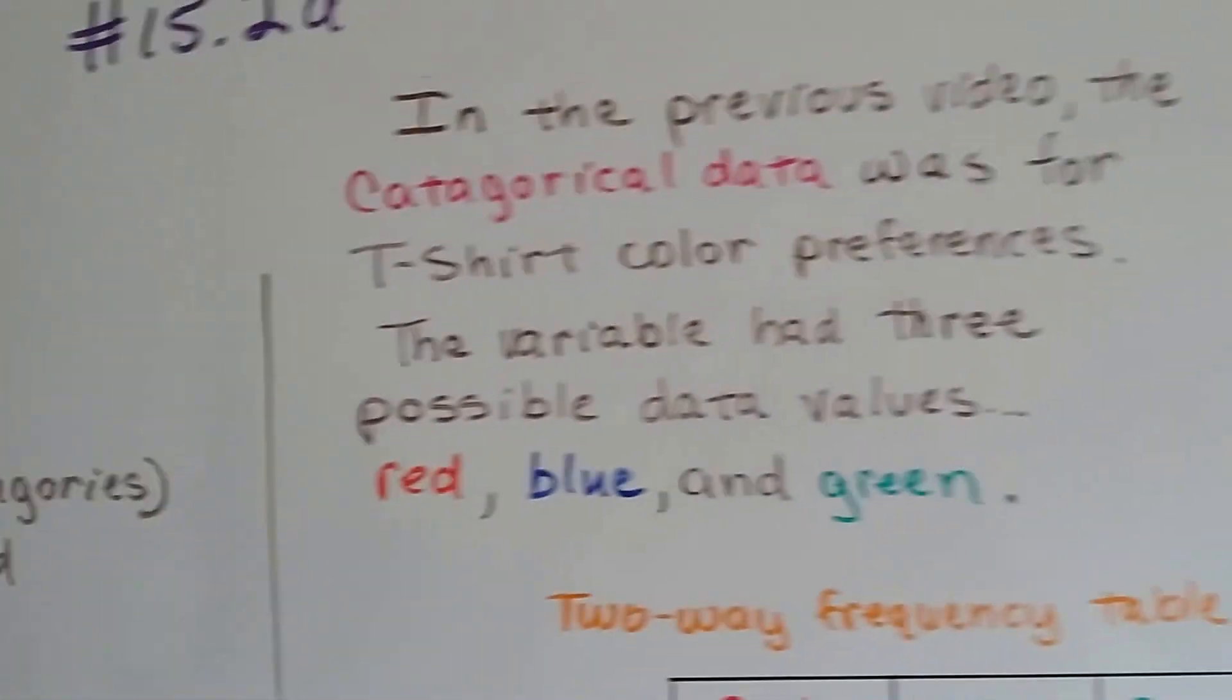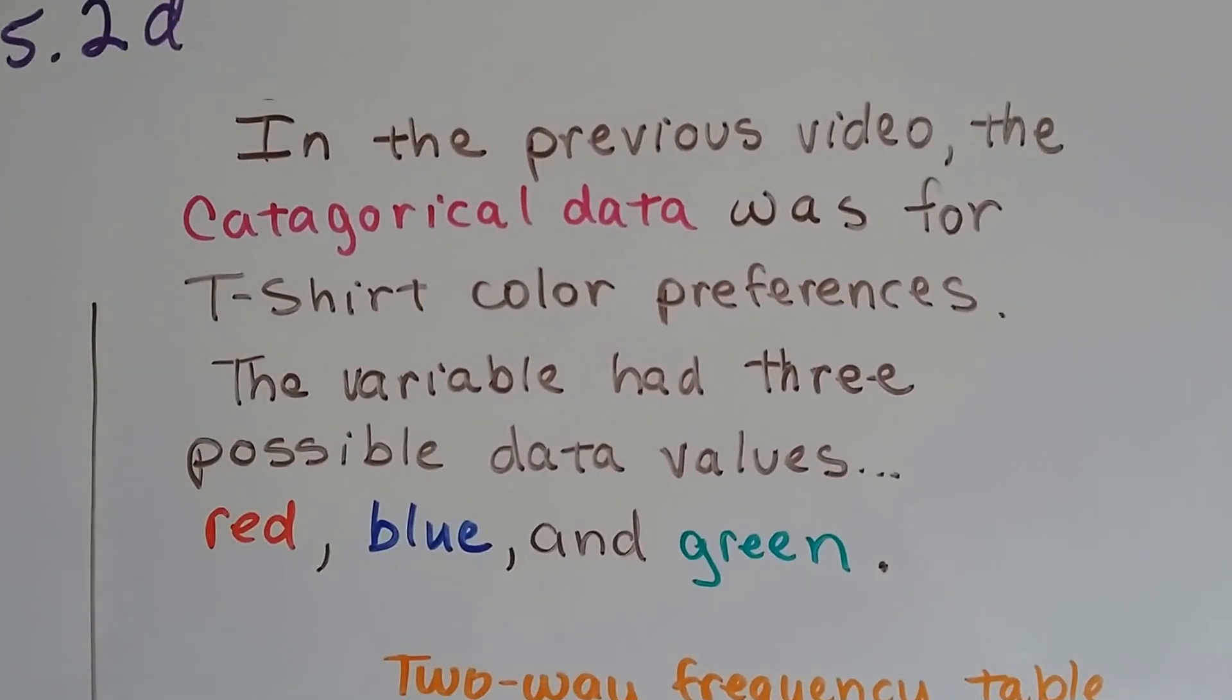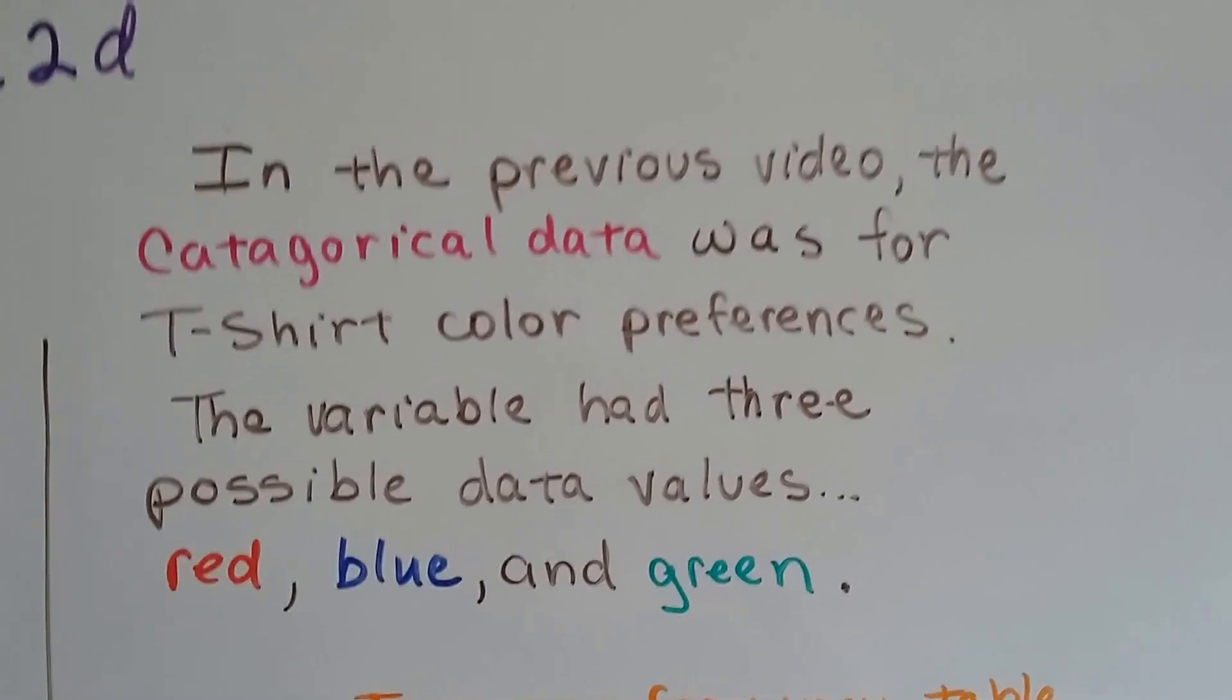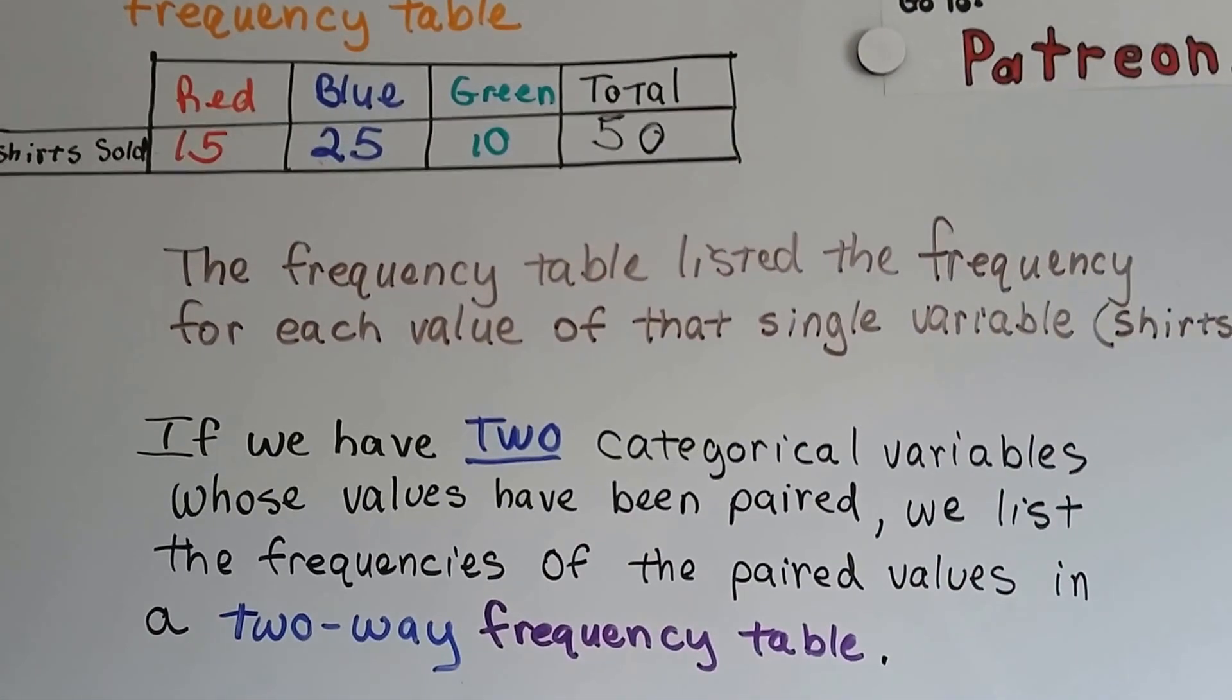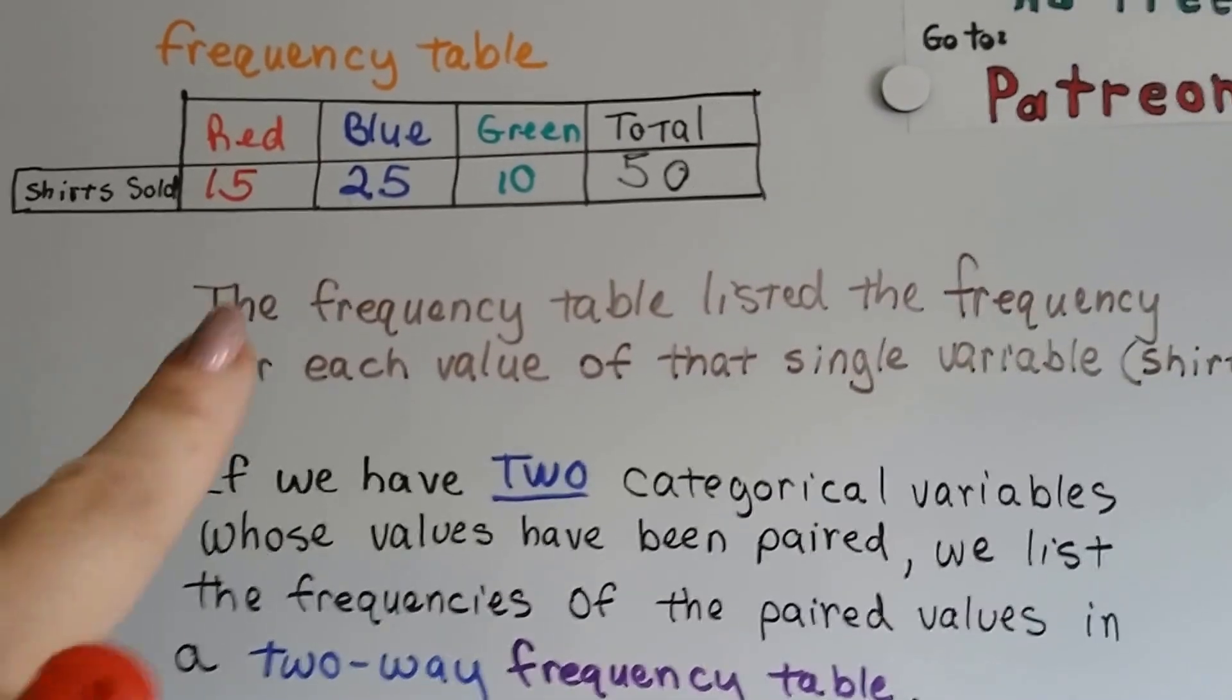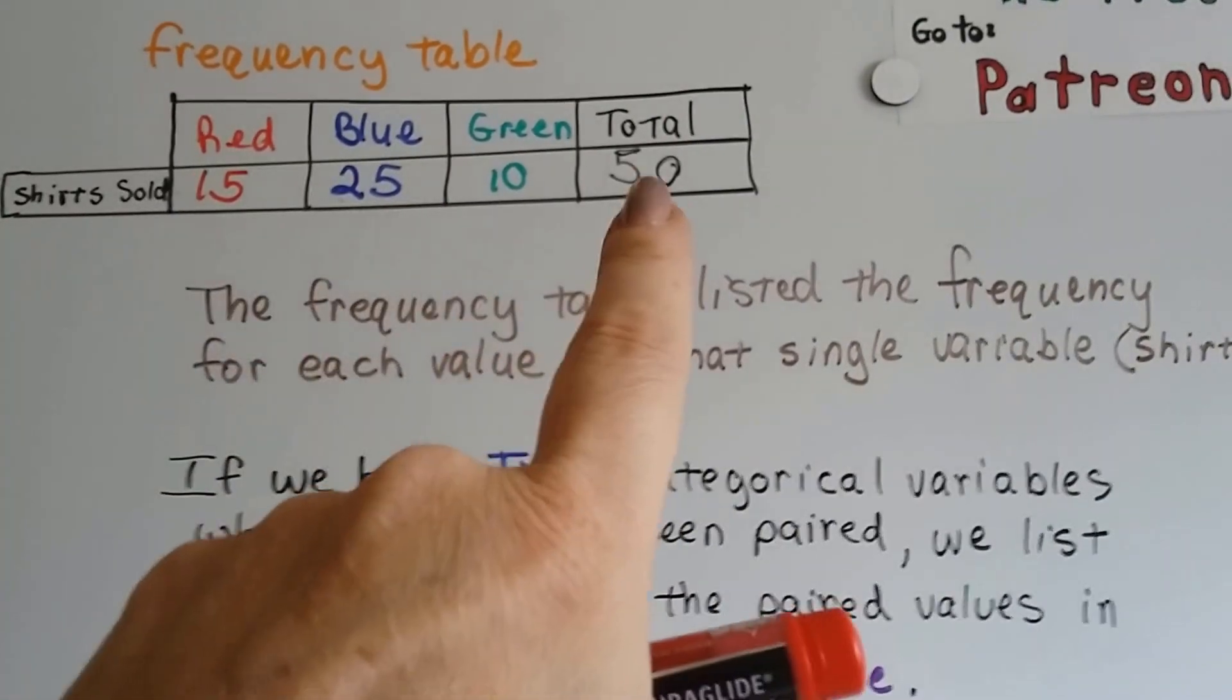Now, in the previous video, the categorical data was t-shirt color preferences, and the variable had three possible data values: red, blue, and green. And we had started out by making a frequency table, and it showed that out of the red ones, there were 15 sold, blue ones are 25, and green were 10. And for shirts sold, we could have 50, and that would just be a regular frequency table.